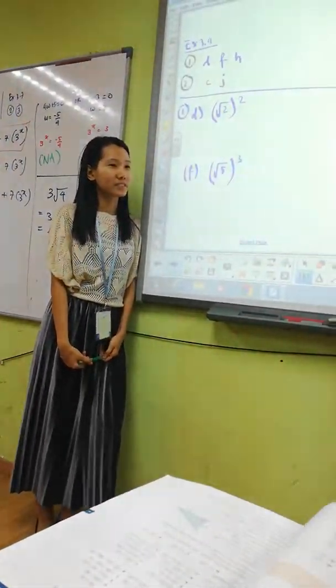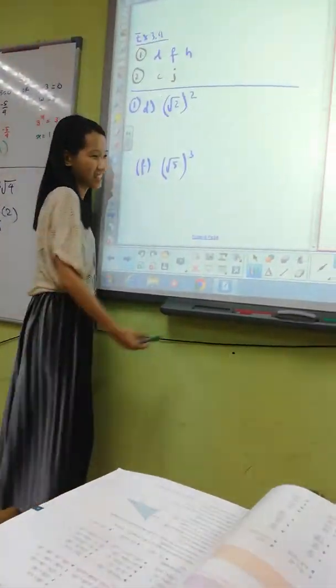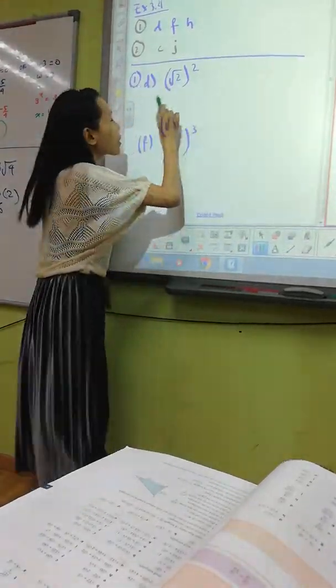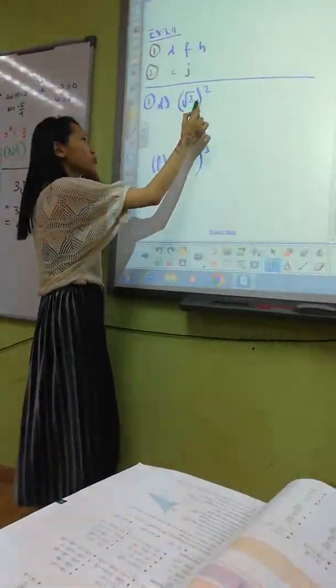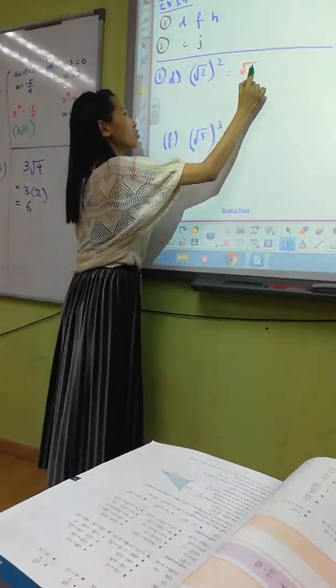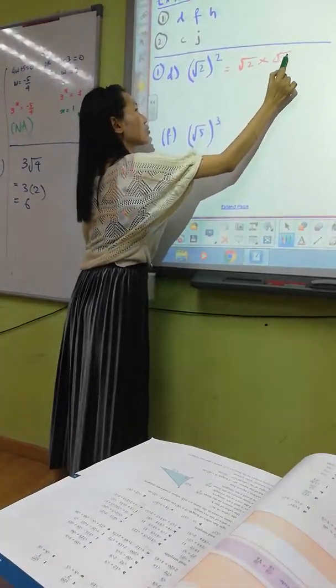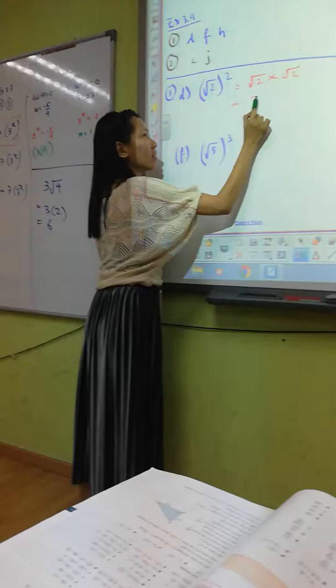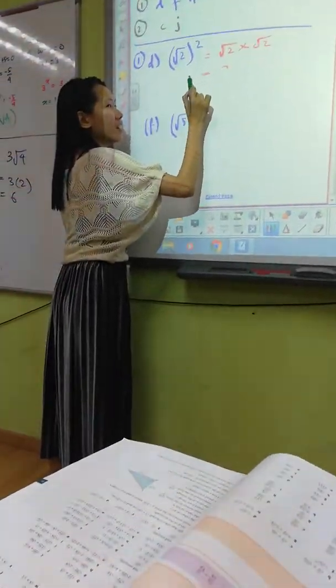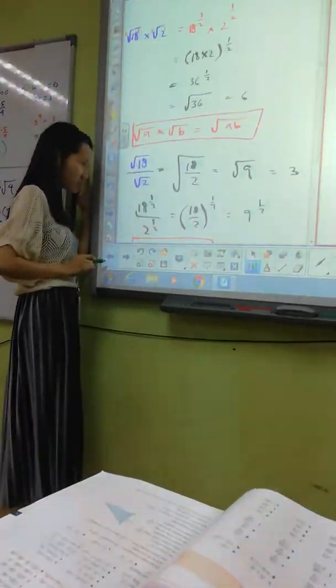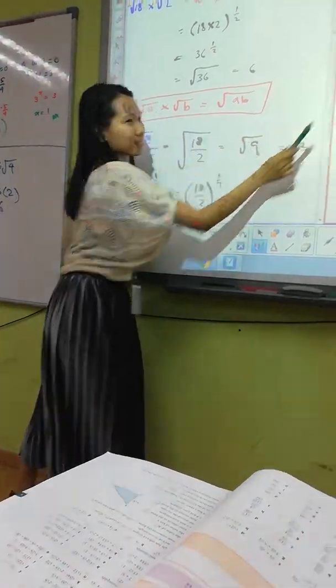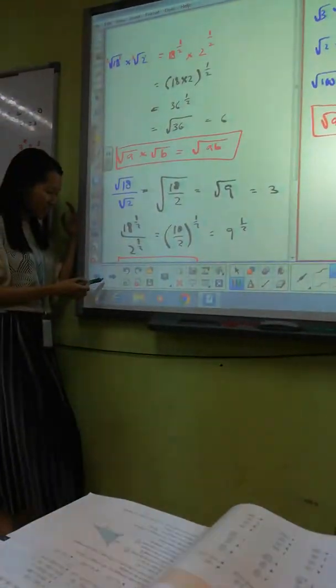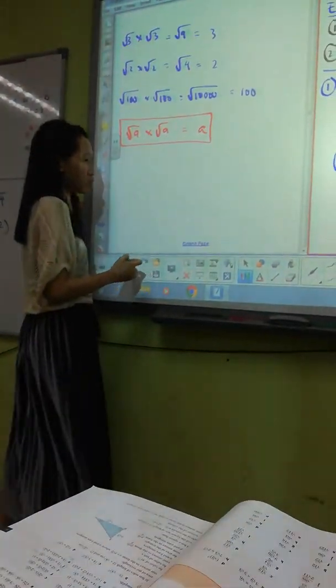Let's start from you. Simming, square root of 2 times square root of 2, meaning √2 times √2. So what do you get? Forget the rule already? What do you get, Simming? Yes, you get 2.